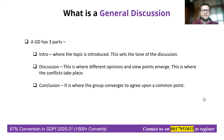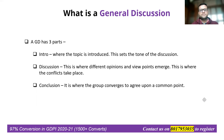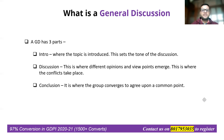A GD usually has three parts. First is the intro, where the topic is introduced after the moderator has given you the topic and you've done your thought collection — this sets the tone for the discussion. Then comes the actual discussion part, where different opinions and viewpoints emerge, conflicts take place, and leaders of the discussion stand out. The last part is the conclusion, where the group converges to agree upon a common point.